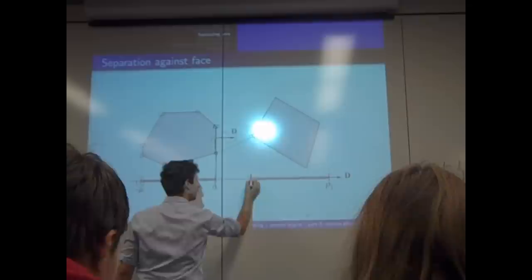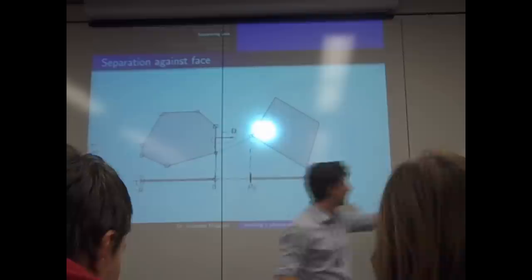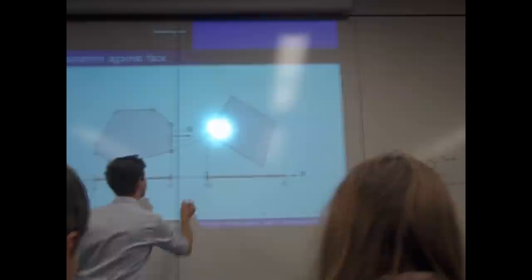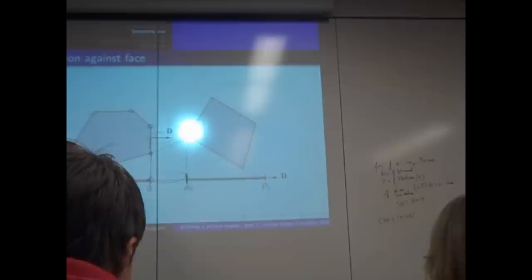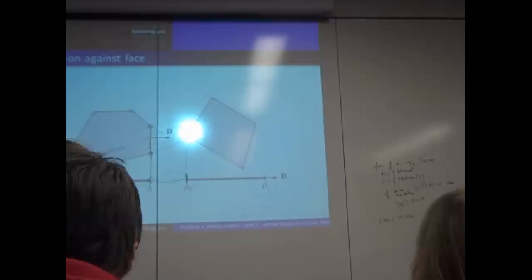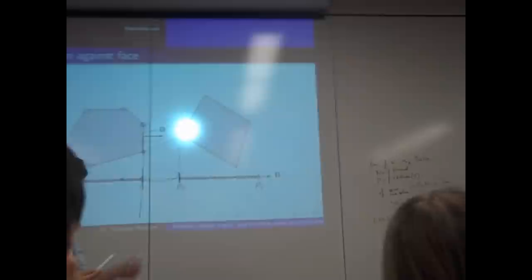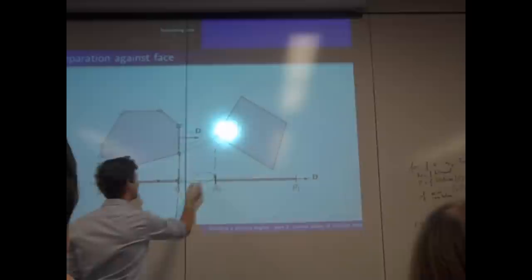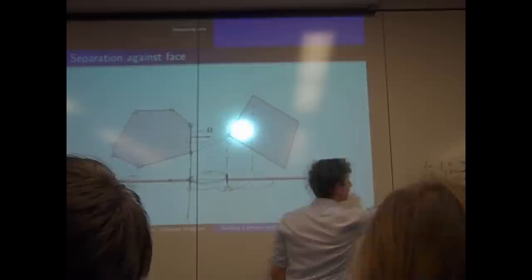What we're computing is the offset from the projection of the reference point to the projection of the vertices. When we do the dot product between a vertex minus the reference point P with the normal N, we get the signed distance — positive if we're on the outside, negative if we're behind the face. We stop as soon as we find a vertex on the wrong side. We do the same for all the faces of the second shape as well.